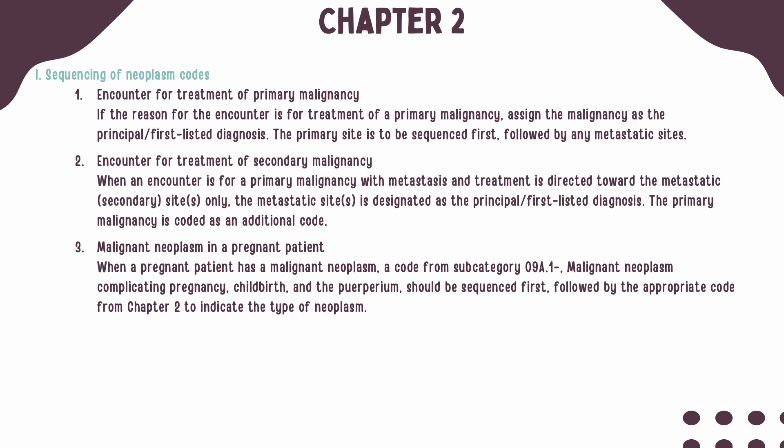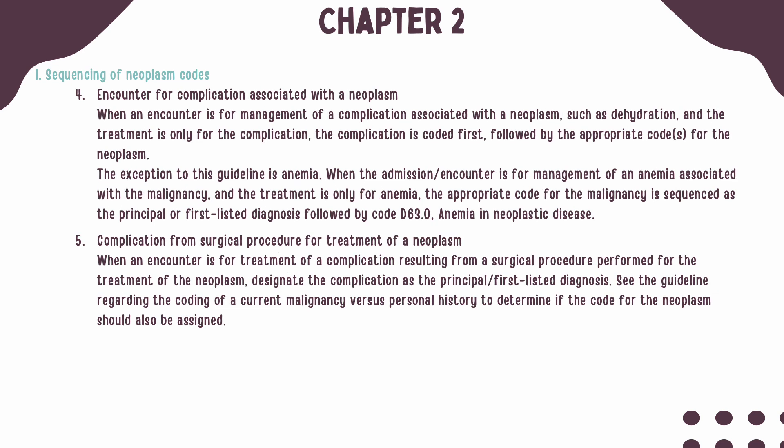Sequencing of neoplasms can be a little tricky, so here are a few examples. If the reason for the encounter is for treatment of the primary malignancy, it should be listed first followed by any codes for metastatic sites. When an encounter is for a primary malignancy with metastasis and the only treatment is for the secondary site, the metastatic site should be listed first followed by the code for the primary malignancy. If a patient is pregnant and has a malignant neoplasm, the first listed code should be from subcategory 09A.1 followed by the appropriate code for the neoplasm. When the encounter is for management of a complication associated with the neoplasm, the complication should be sequenced first followed by the code for the neoplasm — with one exception for anemia. If the treatment is only for the anemia, the malignancy should be sequenced first followed by code D63.0 for anemia in neoplastic disease.